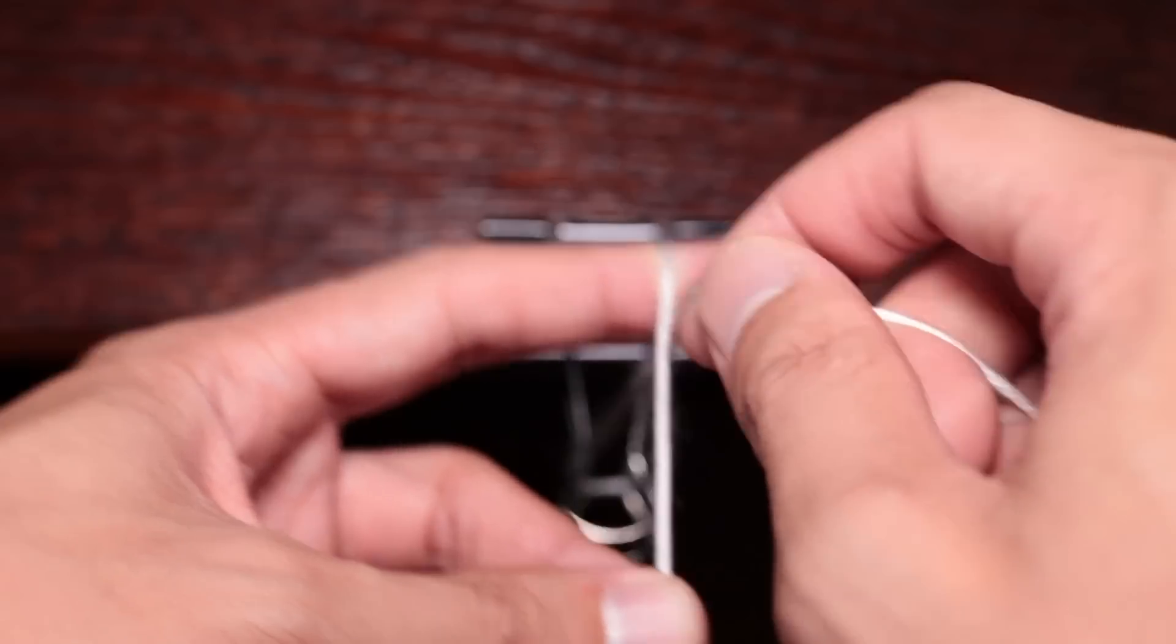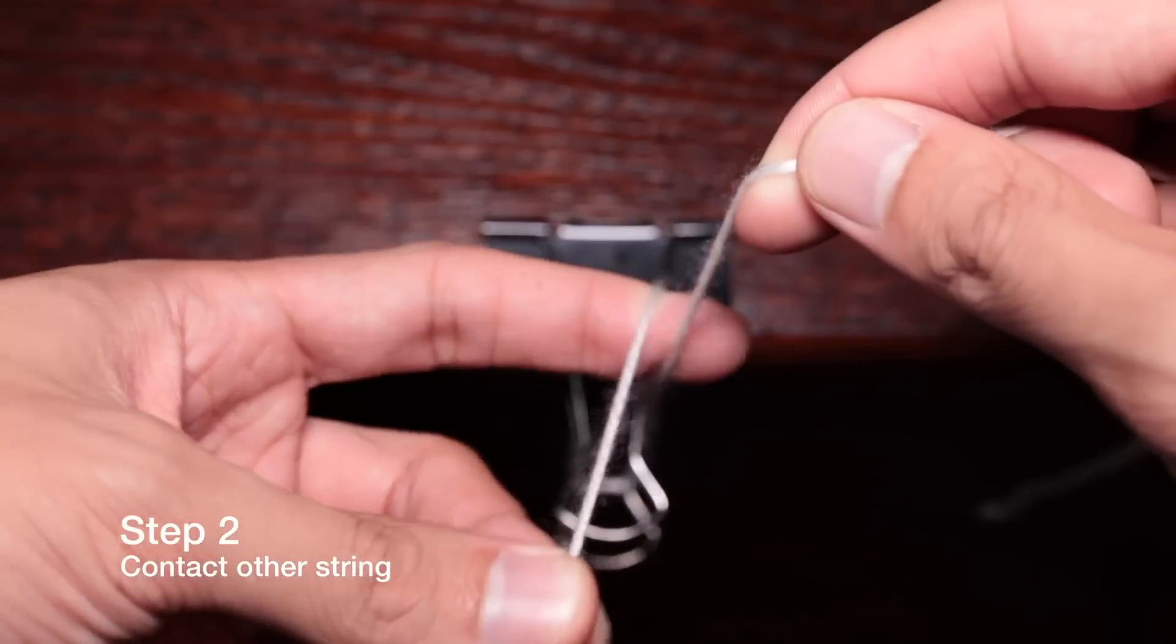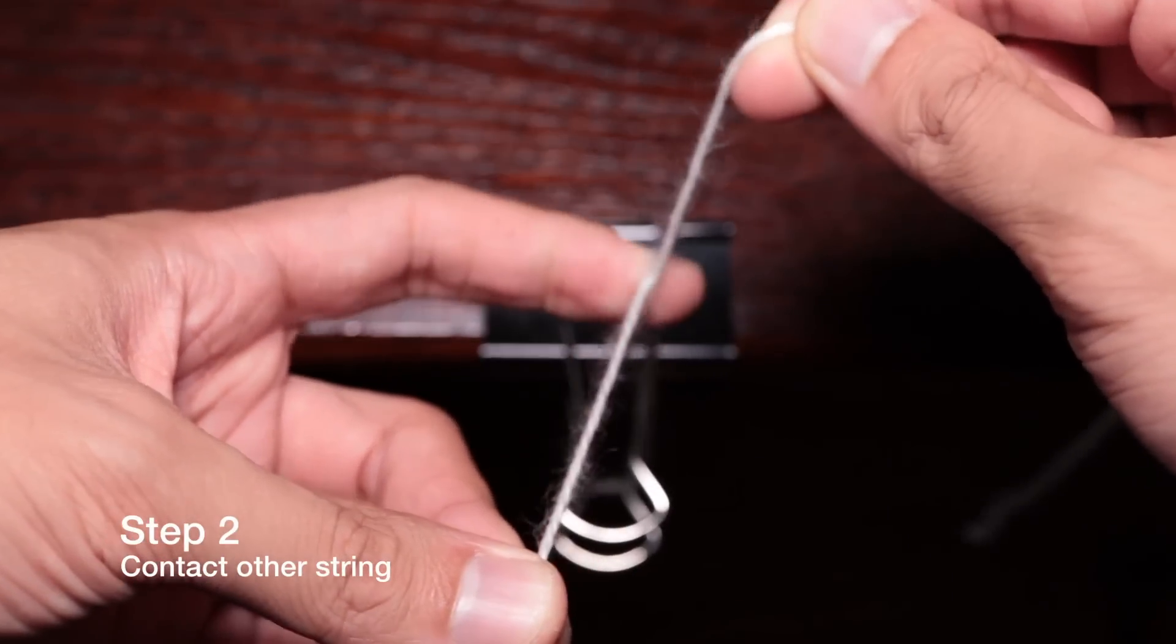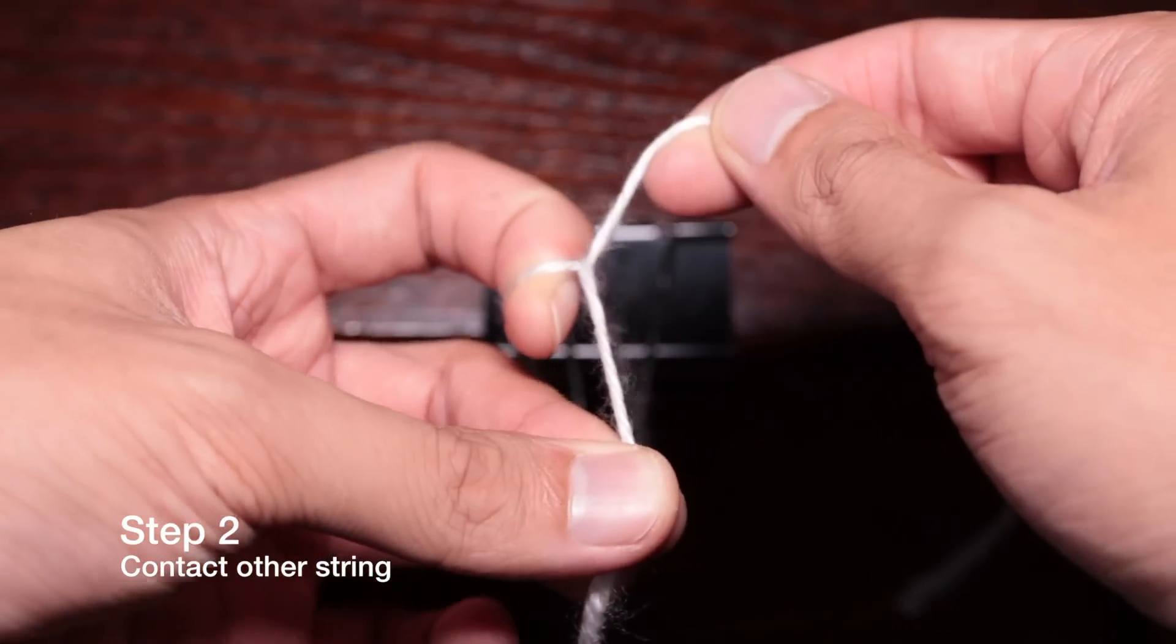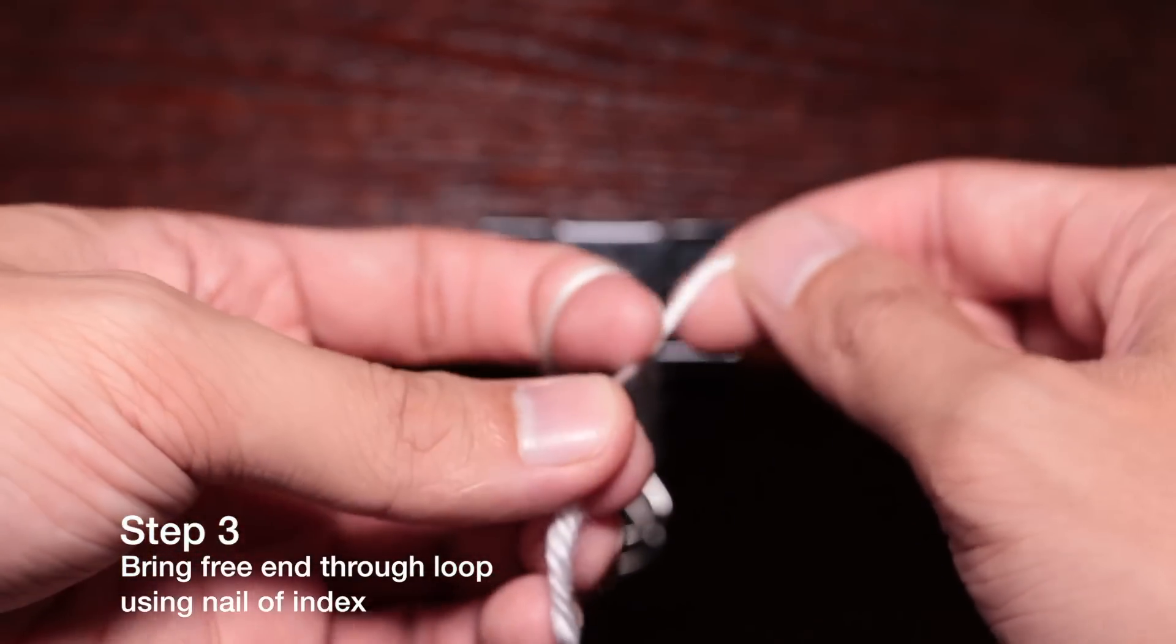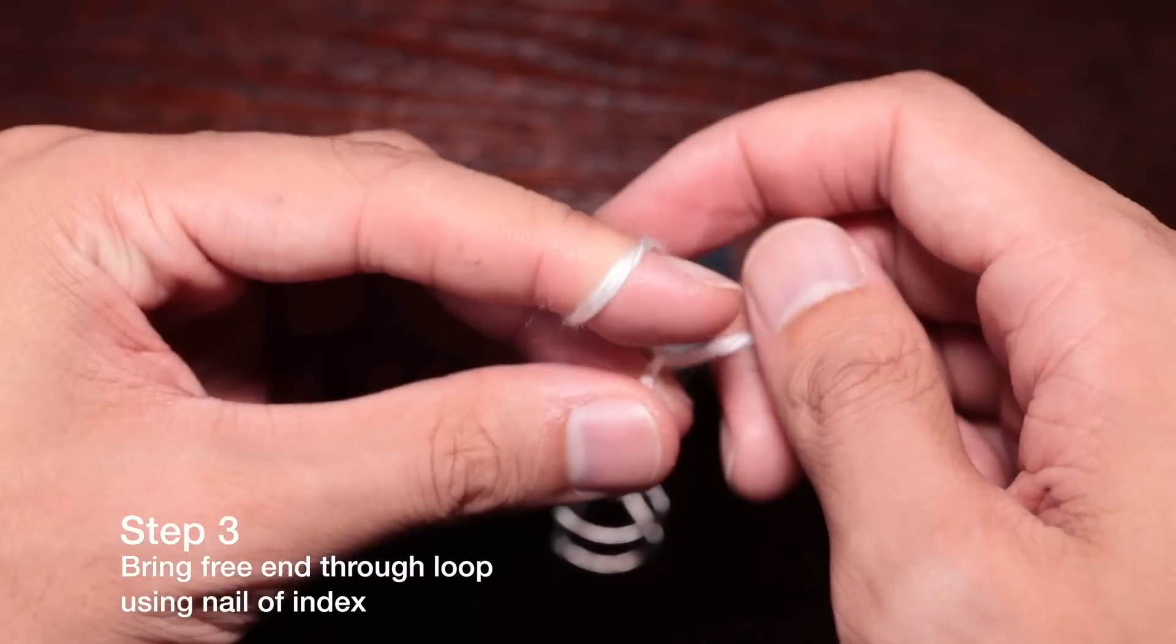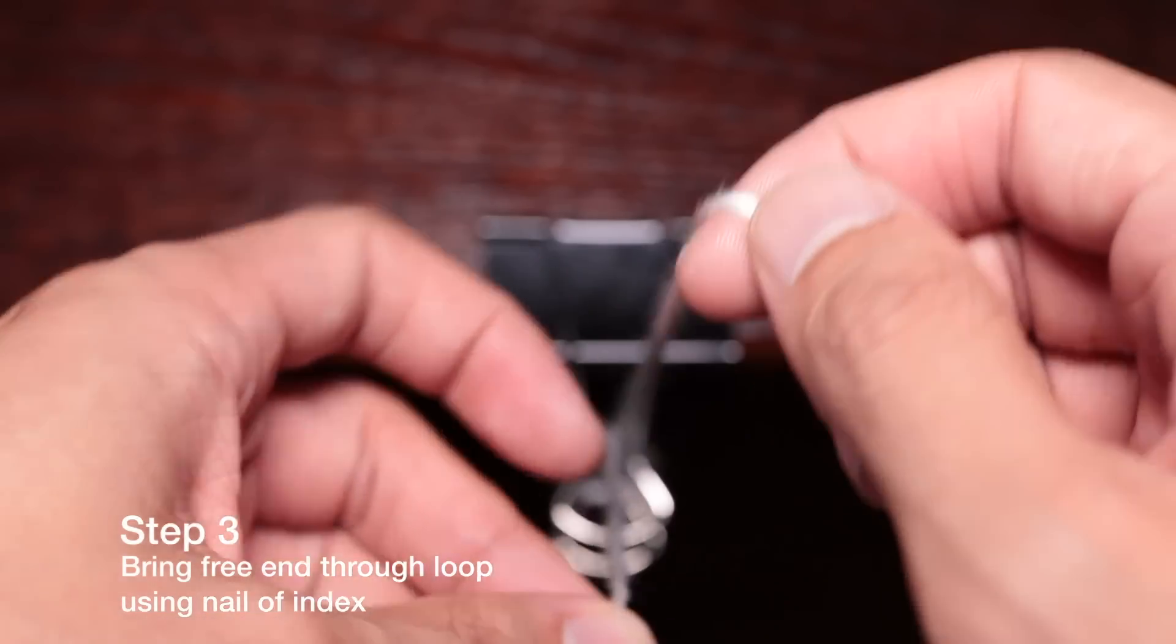Then you're going to be contacting the other string between your index finger and the taut string. Pulling away that string you contacted to then encounter the free end again with the nail of your index finger, you're going to be pulling that free end through with the fingernail. This is quite tricky at first and you're going to have to play a bit with the tensions to see how that works exactly, but it's easier than it seems.